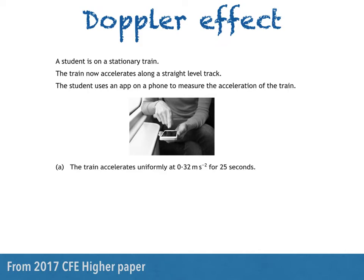A student is on a stationary train. The train now accelerates along a straight level track. The student uses an app on a phone to measure the acceleration of the train — somebody putting their smartphone to good use rather than just playing games or checking social media posts. The train accelerates uniformly at 0.32 ms⁻² for 25 seconds.